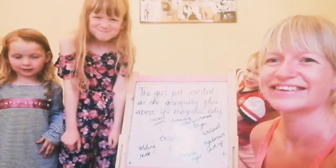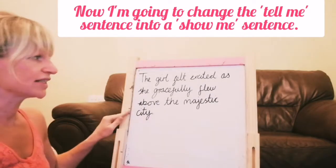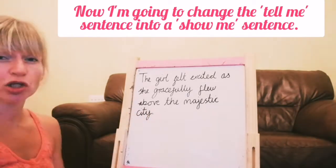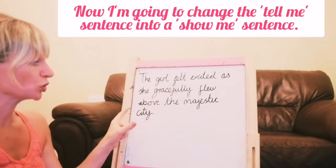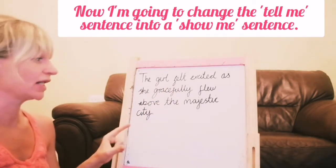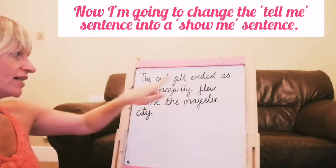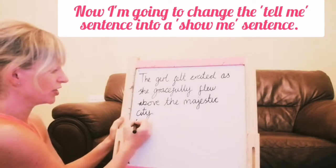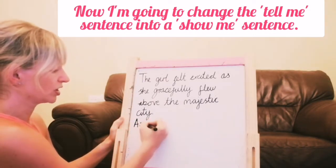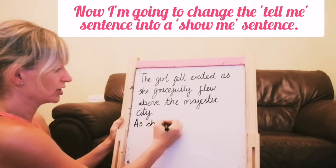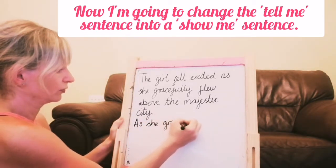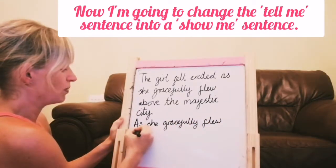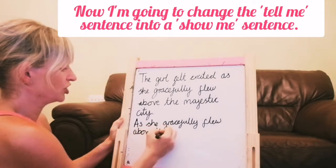I'm going to change this tell me sentence into a show me sentence now. I'm also going to change the order of the sentence and put the subordinate clause that is at the end at the beginning. My subordinate clause is: 'As she gracefully flew above the majestic city.' So I'm going to put that first, with a capital letter for the start: as she gracefully flew above the majestic city.